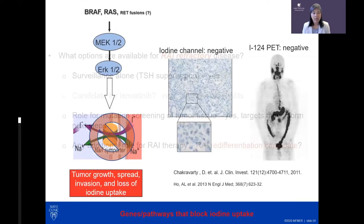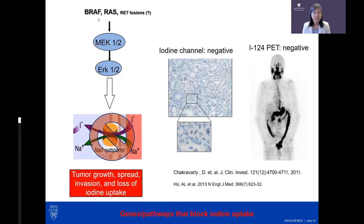The mutations driving thyroid cancers signal through a pathway that not only grows the tumor and causes invasion, but also shuts the gate to iodine — so these cells can't take up iodine. Under the microscope, the iodine channel staining is absent. On I-124 PET scan, there is no uptake in the lungs, driven by this pathway closing the gate to iodine.